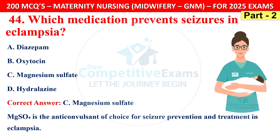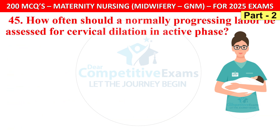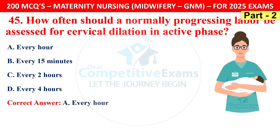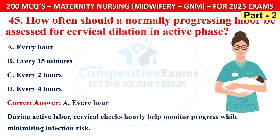Question 45: How often should a normally progressing labour be assessed for cervical dilation in the active phase? Options are every hour, every 15 minutes, every 2 hours, or every 4 hours. The correct answer is A — every hour. During active labor, hourly cervical checks help monitor progress while minimizing infection risk.